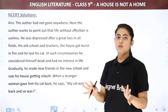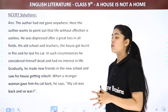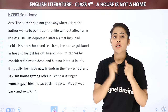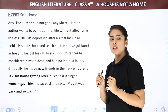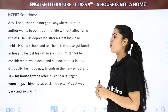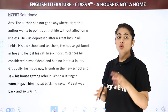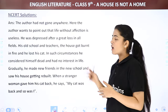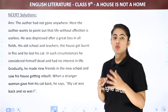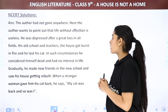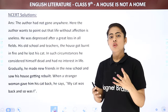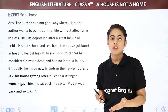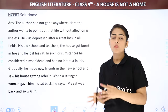The author had not gone anywhere — the author wants to point out that life without affection is useless. If there is no love, affection, or friends in life, then it is useless — a house is nothing; it should be a proper home. He was depressed after great losses in all fields: his old school and teachers, the house burnt in fire, and his cat lost. Overall he had lost many things in his life — old teachers not there, friends not there, his house gone, and finally his cat also lost. In such circumstances, he considered himself dead and had no interest in life — like a zombie, a lifeless person. He was alive but he was not really living at that moment.